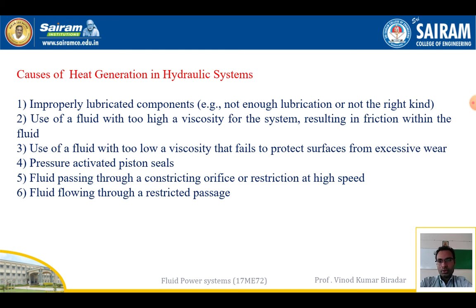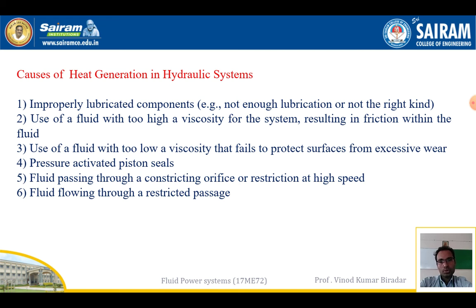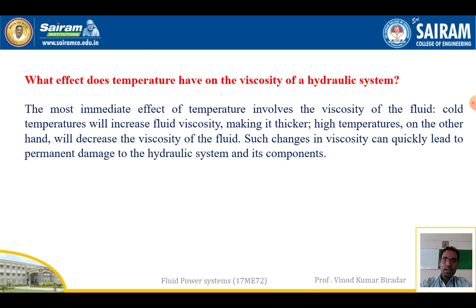Fifth, fluid passing through a contracting orifice or restriction at high speed. Sixth, fluid flowing through a restricted passage. These are the six main causes of heat generation in a hydraulic power system. Whether a fluid has too high or too low a viscosity, both can cause damage to the hydraulic power system. The fluid must be selected according to the requirements of the given work to be completed.